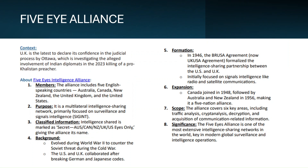The next update is on the Five Eyes Alliance. The UK recently showed confidence in judicial proceedings by Ottawa — Canada — which is investigating the involvement of Indian diplomats in the 2023 killing of a pro-Khalistani preacher. The Five Eyes Alliance consists of five countries: Australia, Canada, New Zealand, UK, and the US. Its purpose is multilateral intelligence sharing, primarily focused on surveillance and signal intelligence.